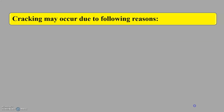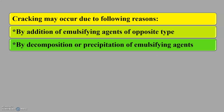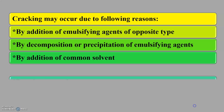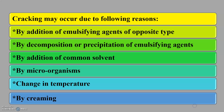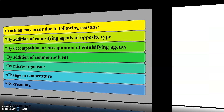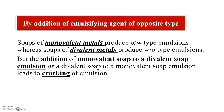Cracking may occur due to the following reasons: by addition of emulsifying agents of opposite type, by decomposition or precipitation of emulsifying agents, by addition of a common solvent, due to microorganisms, change in temperature, or due to creaming. As we know, soaps of monovalent metals produce O/W type of emulsions, whereas soaps of divalent metals produce W/O type of emulsions. The addition of monovalent soap to a divalent soap emulsion, or a divalent soap to a monovalent soap emulsion, leads to cracking of the emulsion.